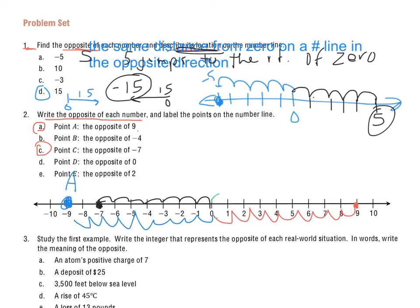So I'm going to start at 0 and do 7 the other direction. 1, 2, 3, 4, 5, 6, 7. So it's right here. And that's C because it's positive 7. It's 7 jumps away from 0 in the opposite direction.